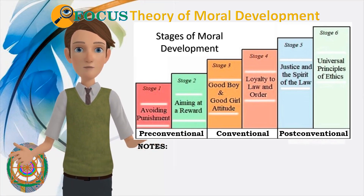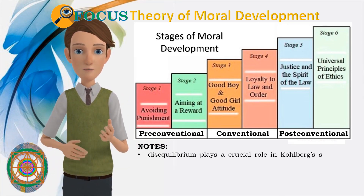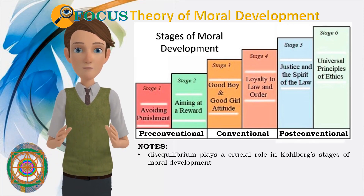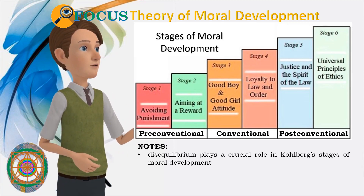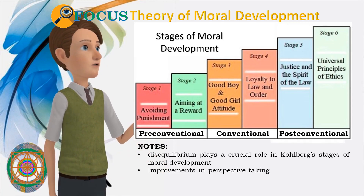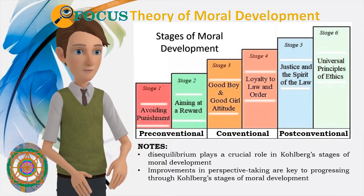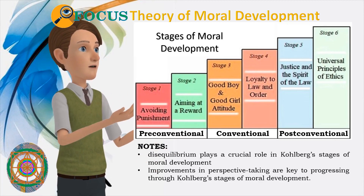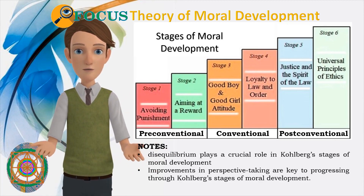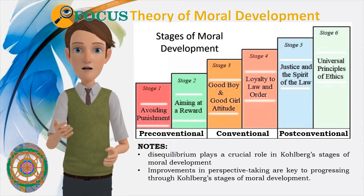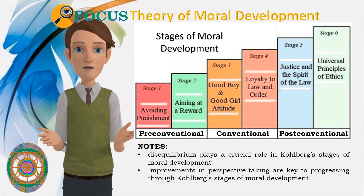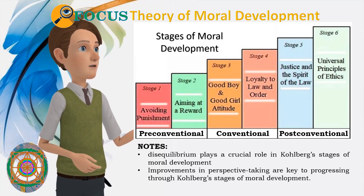It must be noted also that equilibrium plays a crucial role in Kohlberg's stages of moral development. A child encountering a moral issue may recognize limitations in their current reasoning approach, often prompted by exposure to others' viewpoints. Improvements in perspective-taking are key to progressing through Kohlberg's stages of moral development. As children mature, they increasingly understand issues from others' viewpoints. For instance, a child at the pre-conventional level typically perceives an issue primarily in terms of personal consequences, while a person at the conventional level tends to consider the perspectives of others more substantially.